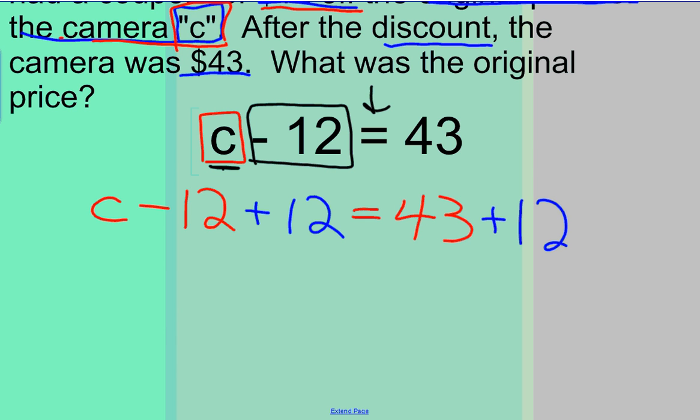This is called the addition property of equality because I want to keep, since this is an equation with an equal sign, I want to keep both sides equal or equivalent. So I add $12 to not just one side, but both sides to keep it balanced.